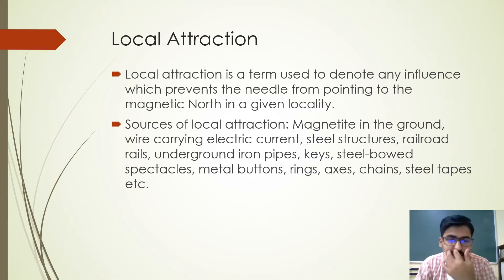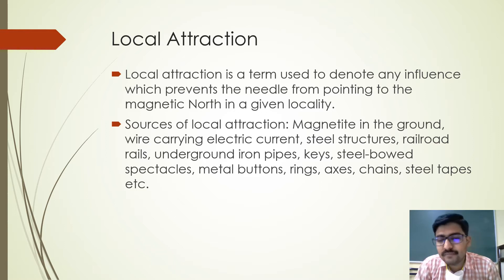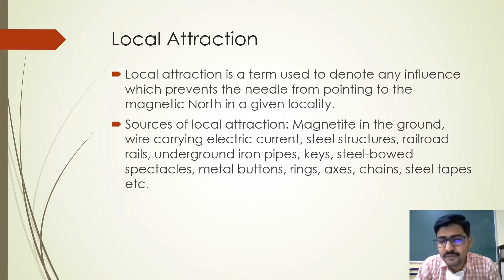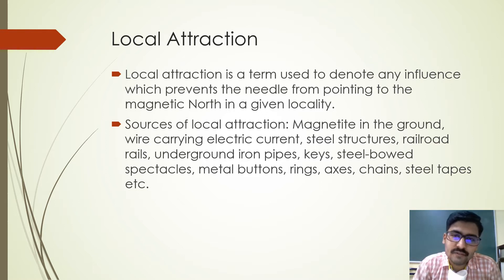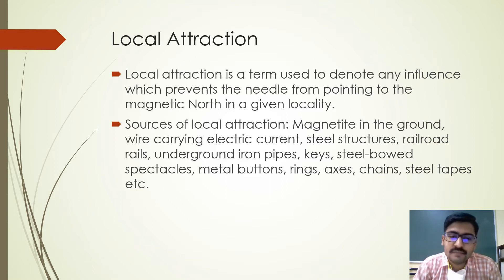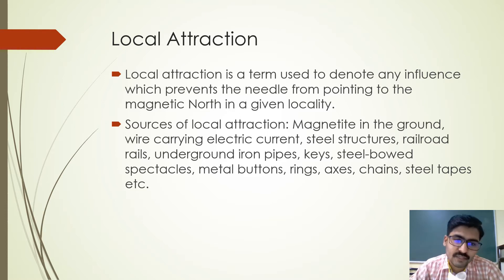Electric wires carrying electric current can also affect the magnetic needle from showing the correct north. Buildings with steel structures, rails, or underground iron pipes are large structures that influence the needle. Even the smallest metal items nearby — like keys in your pocket, a metal chain, silver or gold chain you're wearing, finger rings, or even the metal in spectacles — can affect the magnetic needle from showing the correct north.